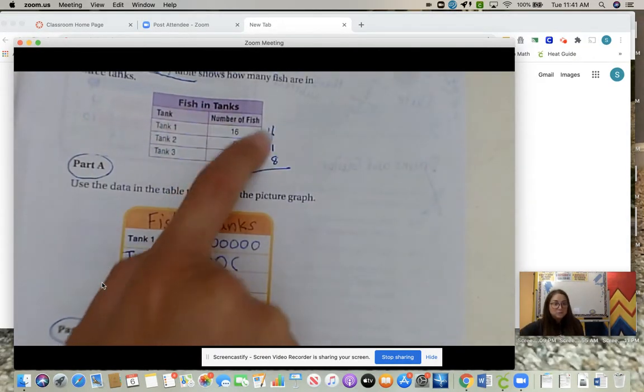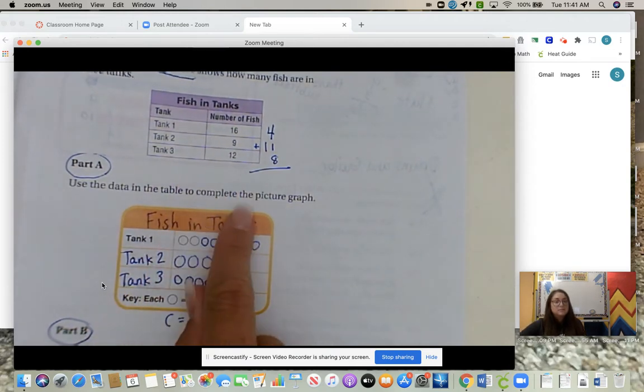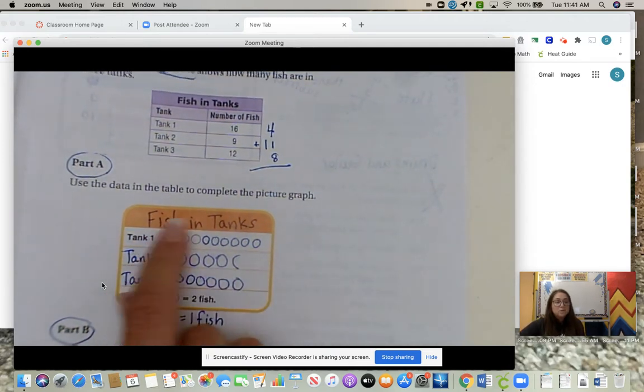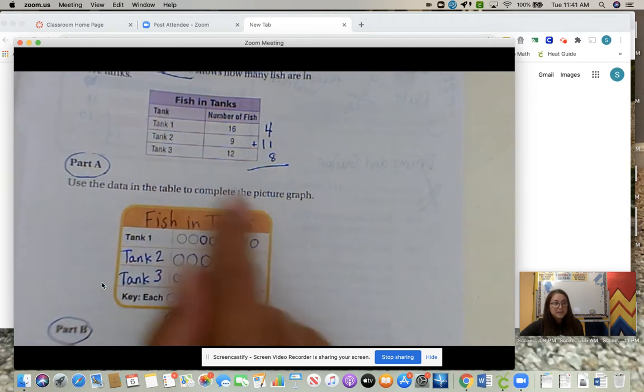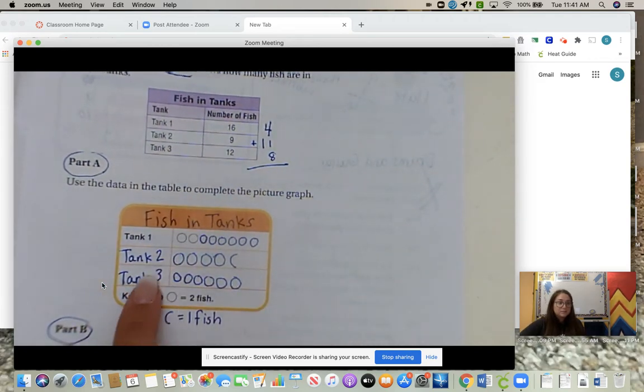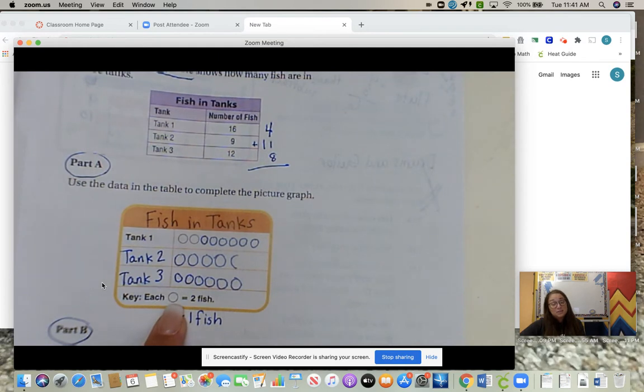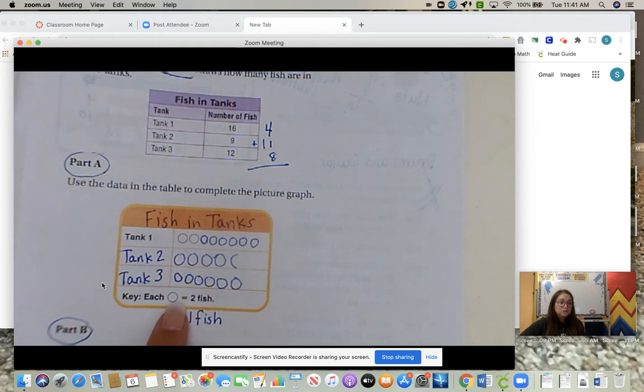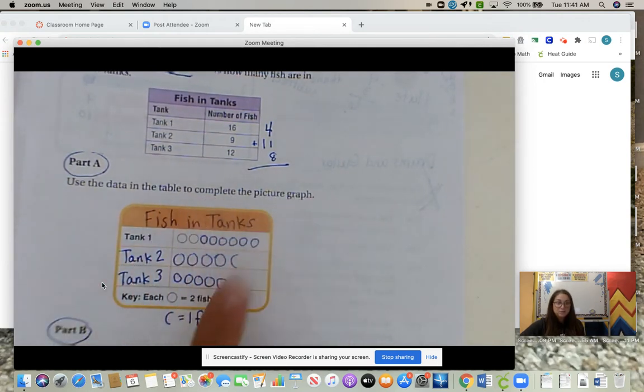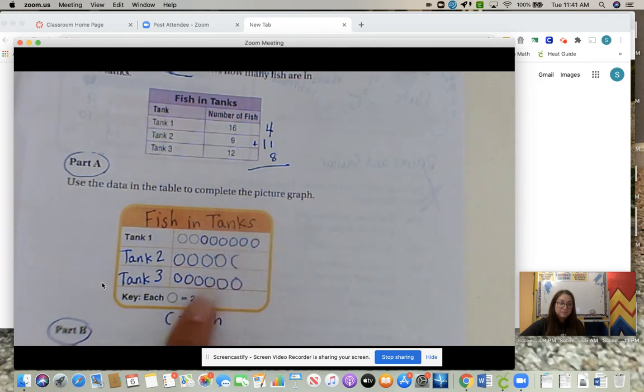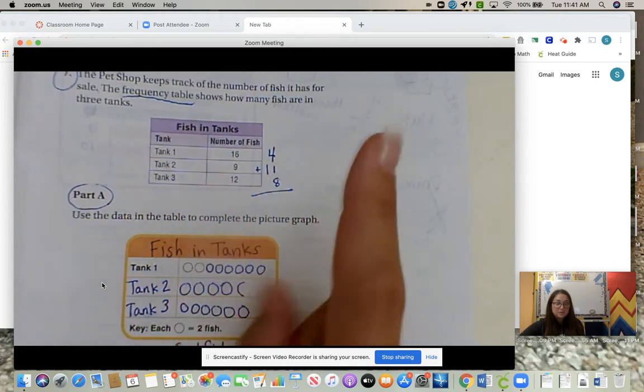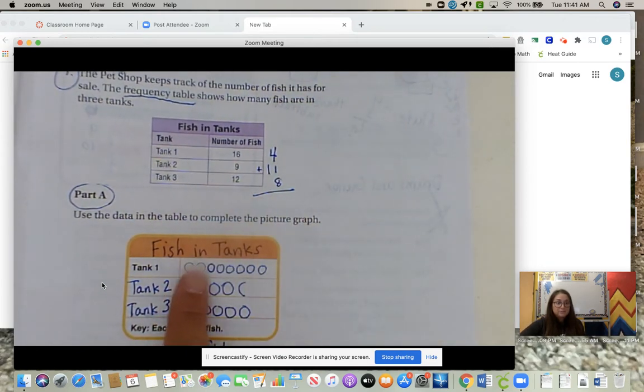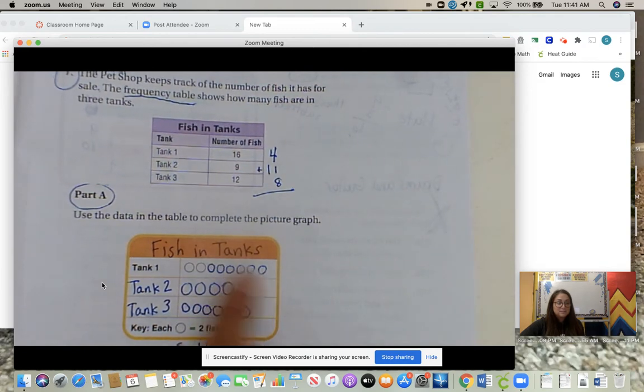Use the data in the table to complete the picture graph. We always write the same title. So fish in tanks, fish in tanks. We keep the same category. The category is tank. So we write tank one, tank two, tank three. They gave us the key. So they made it less challenging. Each circle is two fish. So we are going to skip count by two. Then that means half a circle is one fish because half of two is one. Tank one has 16. So we are going to skip count and stop when we get to 16. Two, four, six, eight, ten, twelve, fourteen, sixteen. We stop.